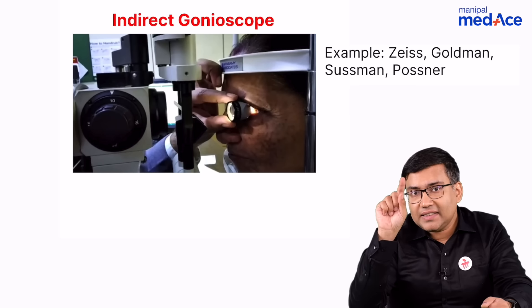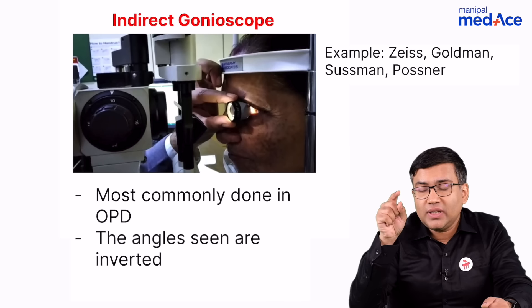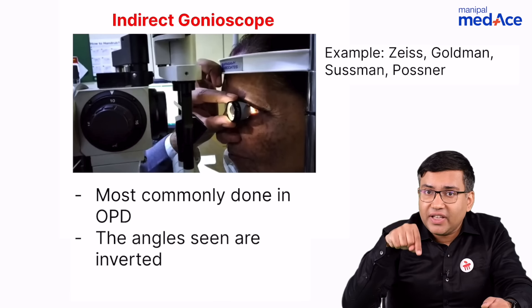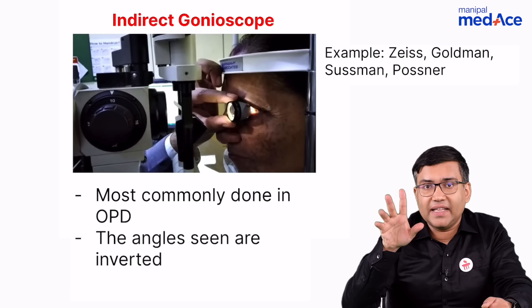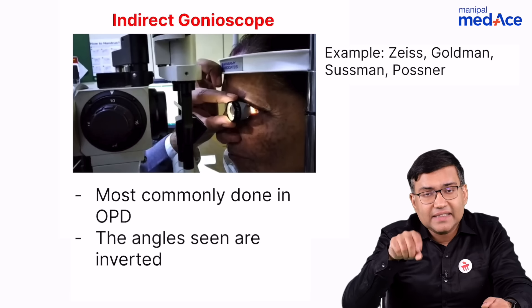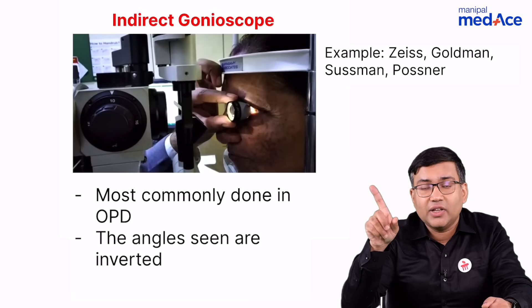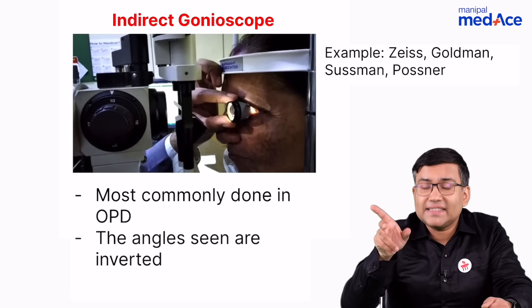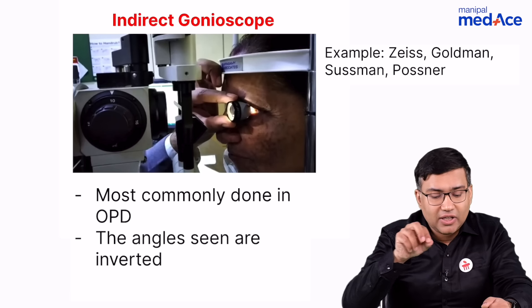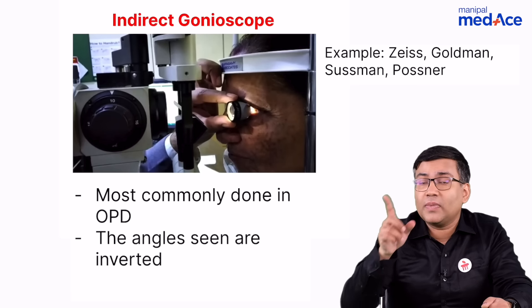Because of the mirrors in indirect gonioscopes, if you are seeing a superior angle, that is actually the inferior angle of the eye. If you are seeing an inferior angle, that is actually the superior angle. What you are seeing is indirect — that is why it is called an indirect gonioscope.